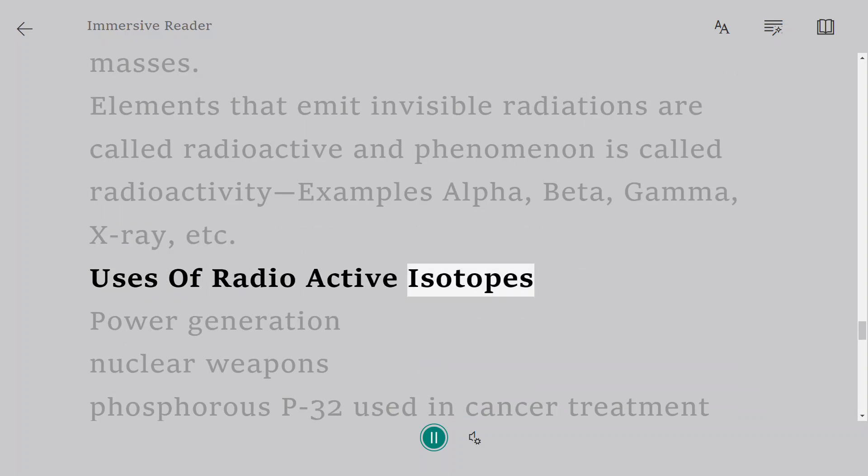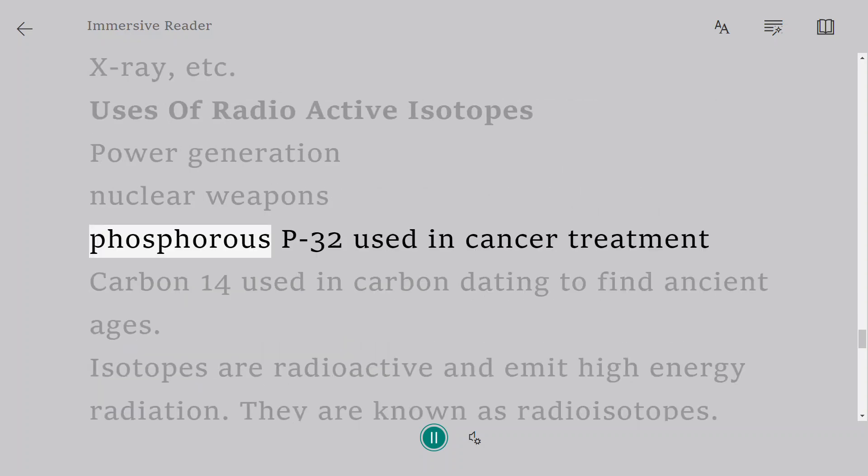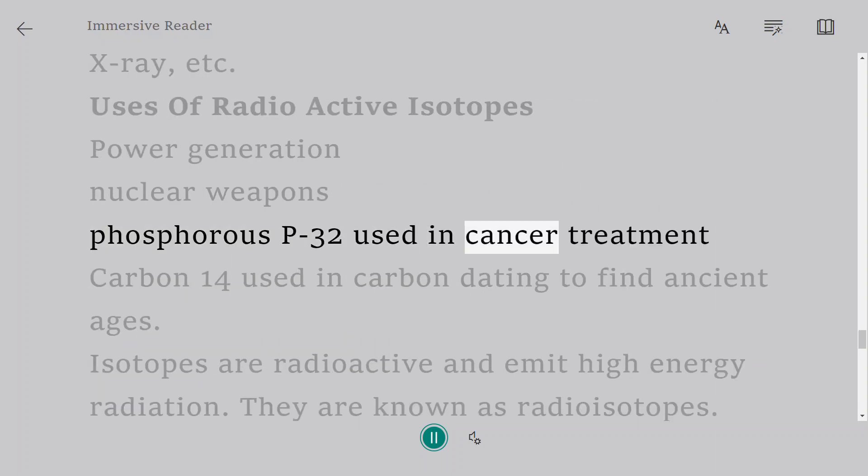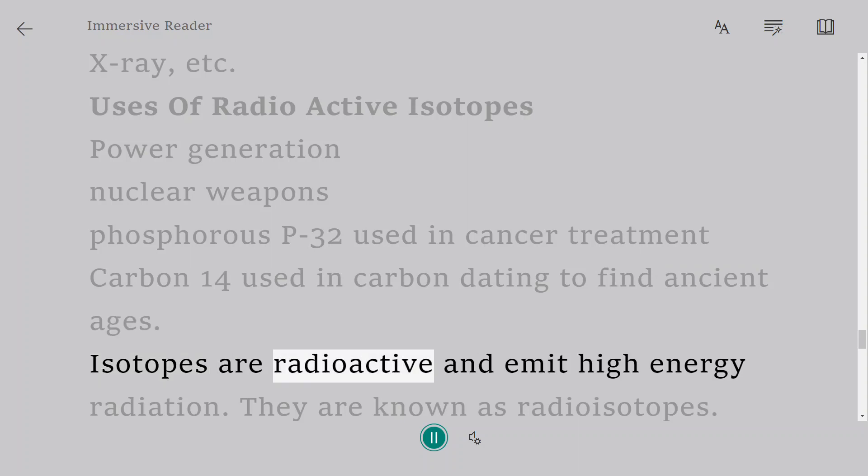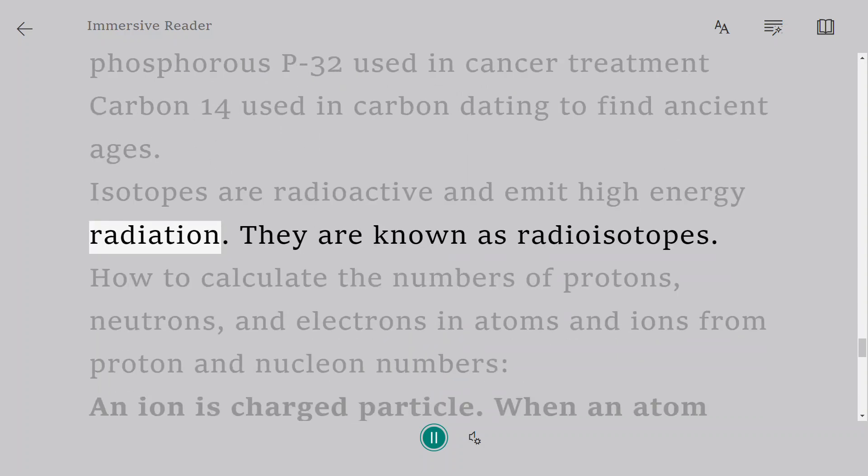Uses of radioactive isotopes: Power generation, nuclear weapons, Phosphorus P-32 used in cancer treatment, Carbon-14 used in carbon dating to find ancient ages. Isotopes are radioactive and emit high energy radiation. They are known as radioisotopes.